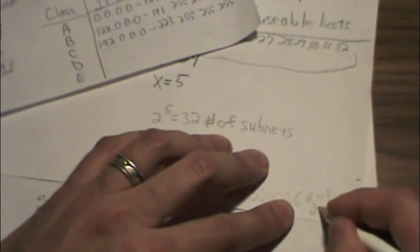524,288, and we subtract our 2, and that gives us 524,286, which is the number of hosts per subnet. And we can go ahead and fill out our table here.